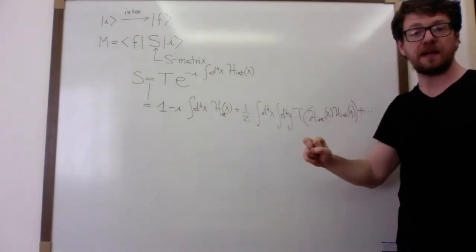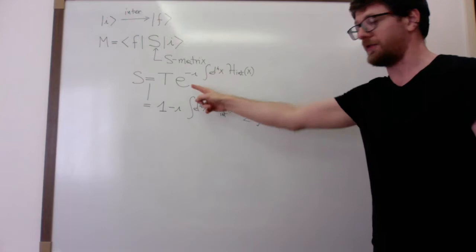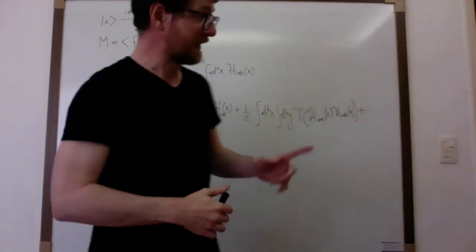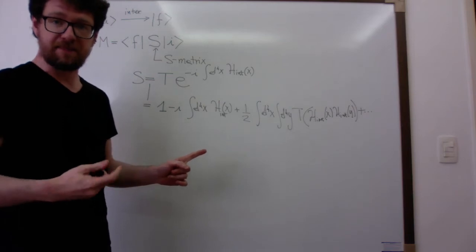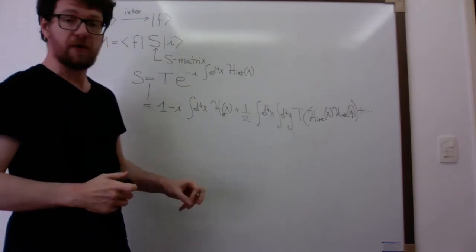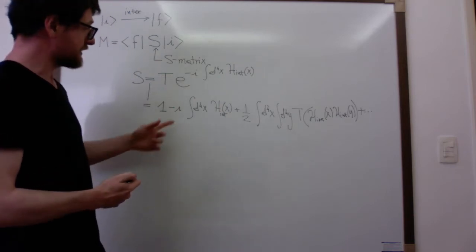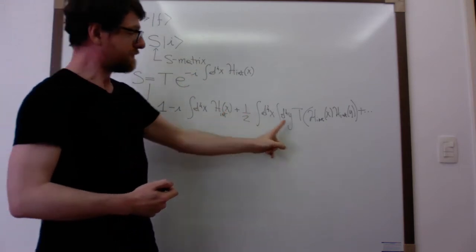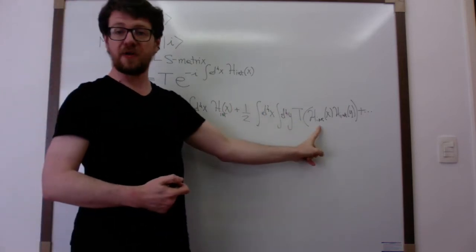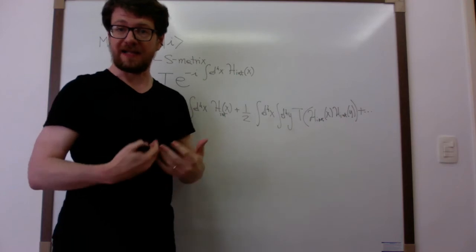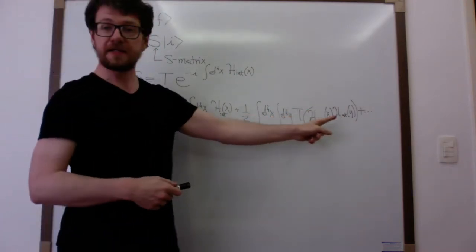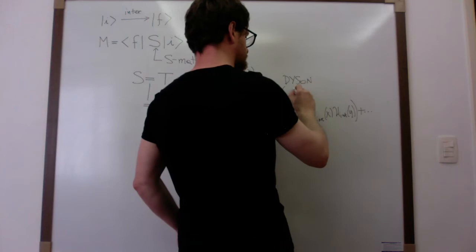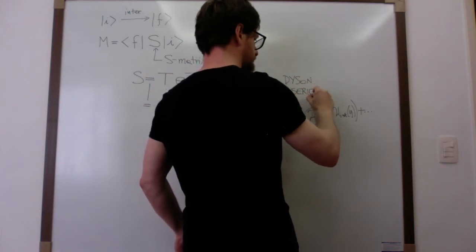This is not a closed exponential. What this formula tells you is to expand this exponential in powers of the interacting Lagrangian. What you obtain is 1 minus i integral d^4x H_int(x) plus (1/2) integral d^4x d^4y T[H_int(x) H_int(y)] plus higher order terms. This prescription is just a compact way to denote this infinite series called the Dyson series. Since the interactions are complicated, it is impossible to resum the series and write a closed formula — that's why in quantum field theory we usually do perturbation theory.